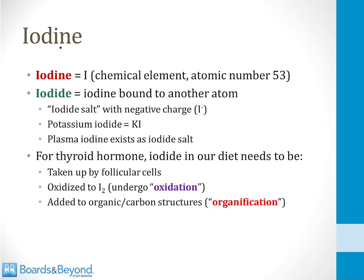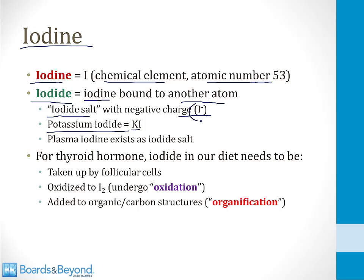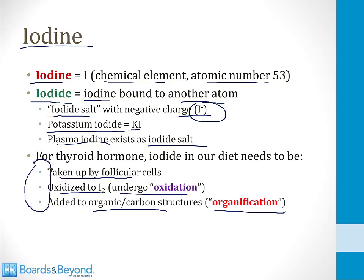To understand thyroid hormone synthesis, you need to understand iodine chemistry. 'Iodine' refers to the atomic element with atomic number 53; 'iodide' means an iodine atom bound to another atom, often as an iodide salt with a negative charge — for example, potassium iodide. Plasma iodine exists as numerous iodide salts. To incorporate iodine into thyroid hormone, the iodide must be taken up by follicular cells, oxidized to I2, and then added to organic structures — a process called organification. These three steps are high-yield for Step 1.